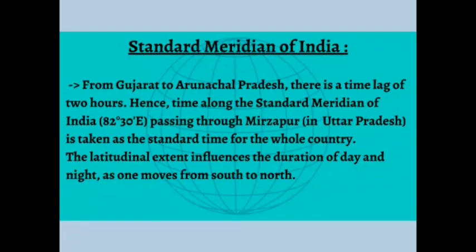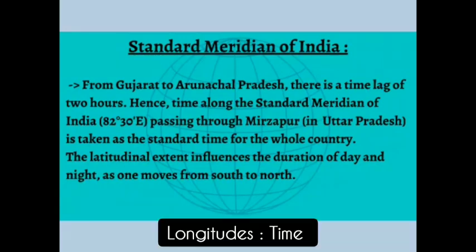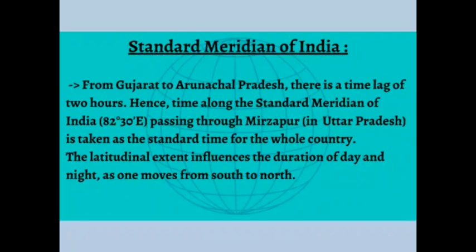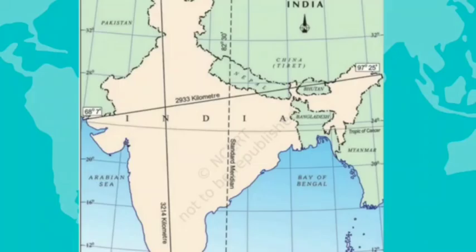The latitudinal extent influences the duration of day and night. As one moves from south to north, longitudes have to do with time and latitudes have to do with the duration of days and nights. That is why we have the standard meridian of India at 82 degrees 30 minutes East, which is followed across the country for day-to-day life.